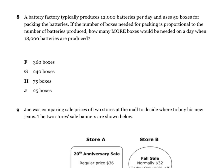Number eight: a battery factory typically produces 12,000 batteries per day and uses 50 boxes for packing batteries. If the number of boxes needed for packing is proportional to the number of batteries produced, how many more boxes would be needed on the day when 18,000 batteries are produced? I can't show you enough what is important there. So, W — start your WKU.